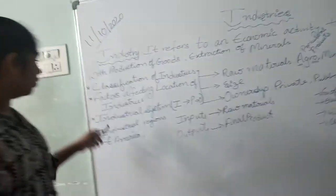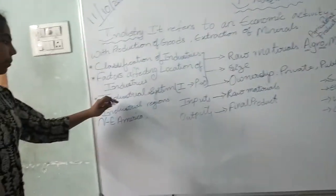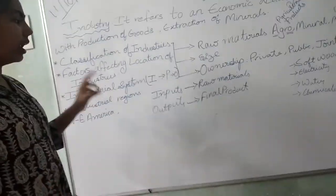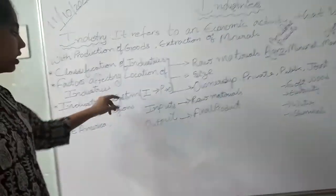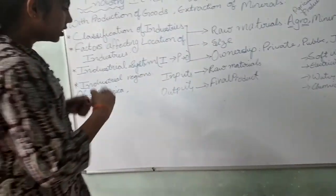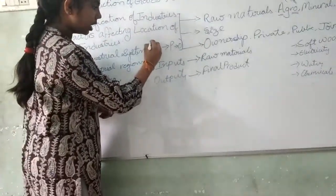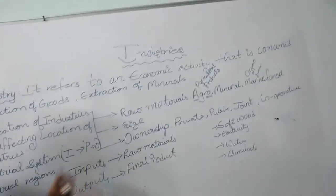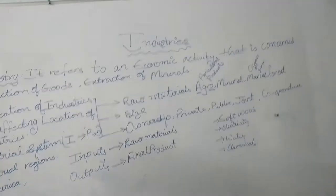Coming to industrial system. Industrial system is the entire process done in an industry. In short form: inputs go to process, and process goes to outputs. This is the industrial system.